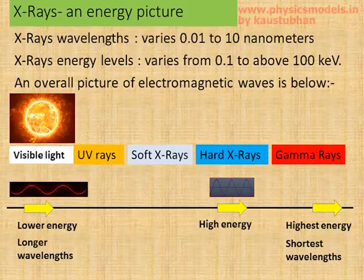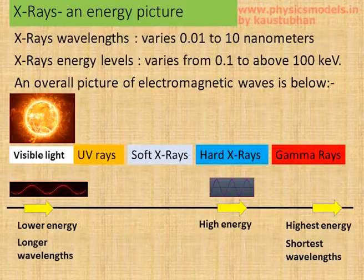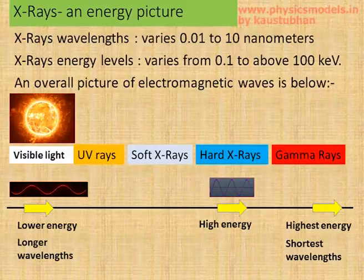So the energy is related to the wavelength. The lower energy waves have longer wavelengths, and the higher energy waves have shorter wavelengths. So moving from left to right, from visible light to UV rays, soft X-rays, hard X-rays, and gamma rays, you can see that the hard X-rays have very high energy and they will have short wavelengths.